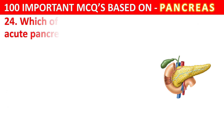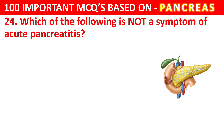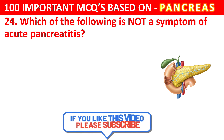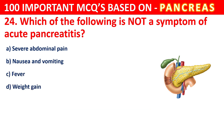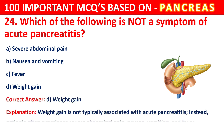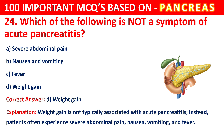Question 24. Which of the following is not a symptom of acute pancreatitis? Options are Severe abdominal pain, Nausea and vomiting, Fever, or Weight gain. The correct answer is D, that is Weight gain. Weight gain is not typically associated with acute pancreatitis. Instead, patients often experience severe abdominal pain, nausea, vomiting, and fever.